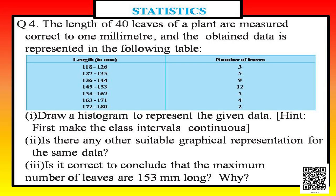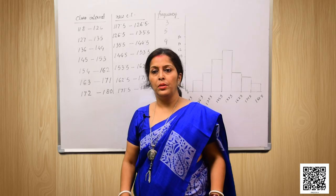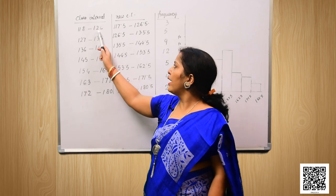Now we come to question number four of exercise 14.3. Here we are supposed to draw a histogram from the given table. The class intervals are 118 to 126, 127 to 135, 136 to 144, and so on, and the frequencies are 3, 5, 9, 12, 5, 4, and 2. But to draw the histogram we cannot have a gap between the upper limit of the previous class and the lower limit of the next class.